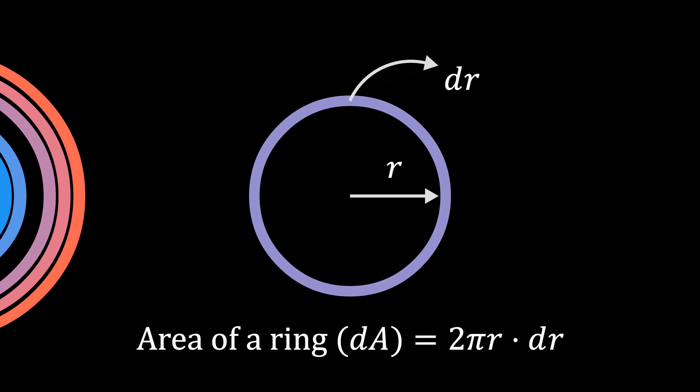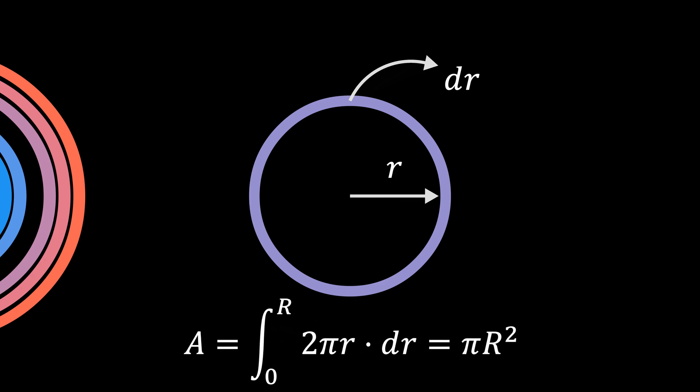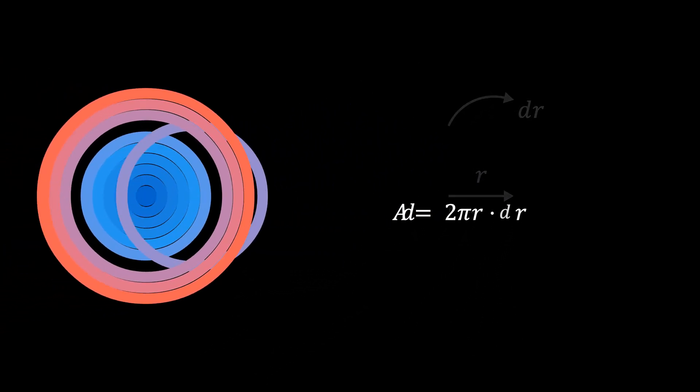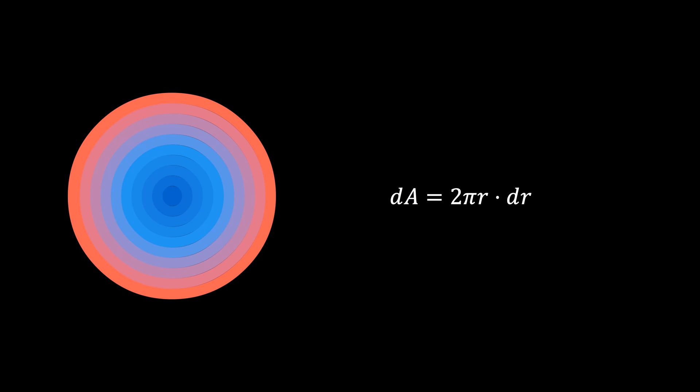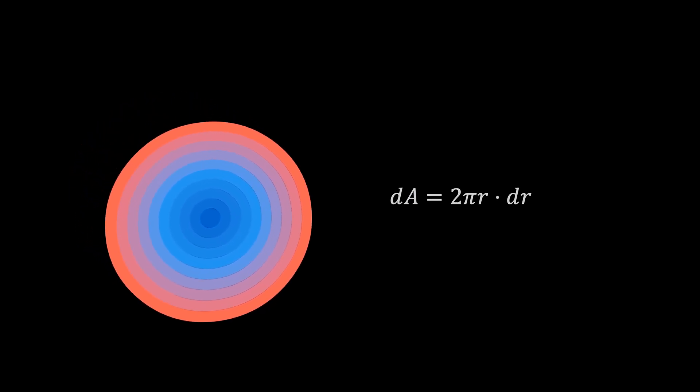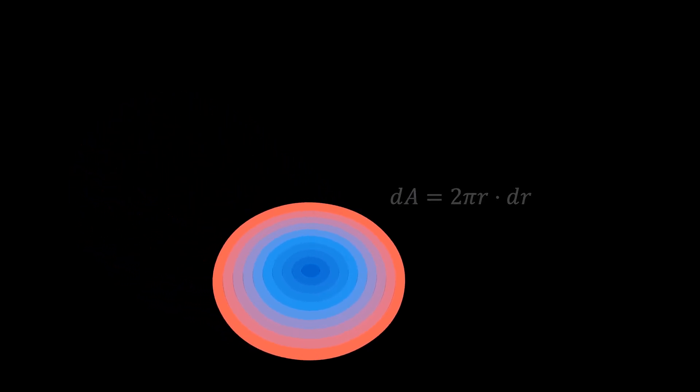The total area of the circle is the summation of the areas of all these rings. Mathematically, this means integrating 2πr dr from r equals zero to capital R. But for now let's just focus on this ring. Remember that this circle is just the 2D projection of the sphere in 3D, and in the same way these concentric rings represent the 2D projections of the concentric spherical shells.